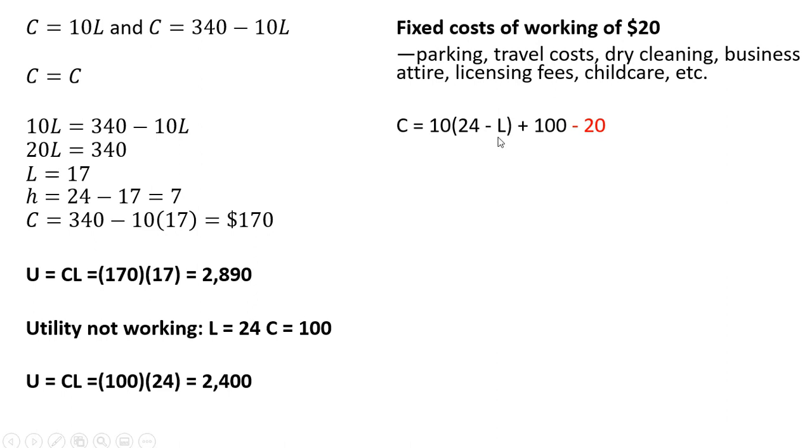So what we're going to do, we're going to take our consumption function and we're going to subtract out the fixed cost. So the minus 20 represents this fixed cost of working.